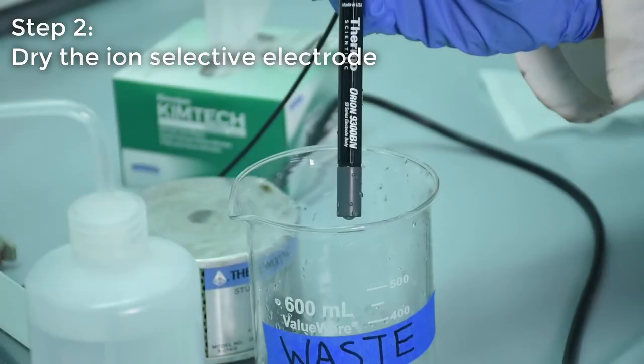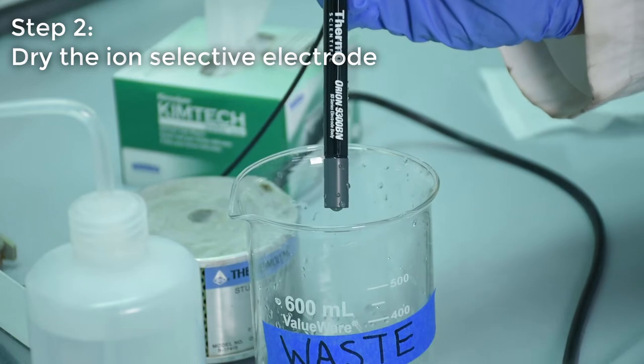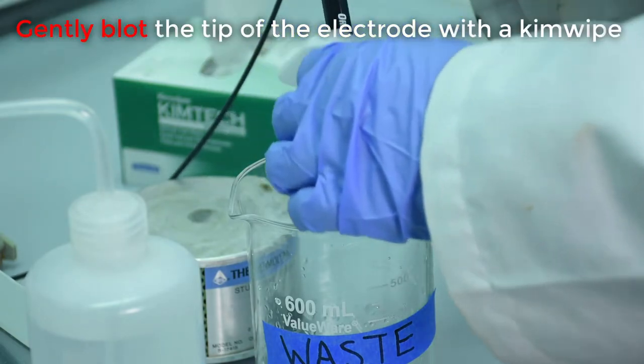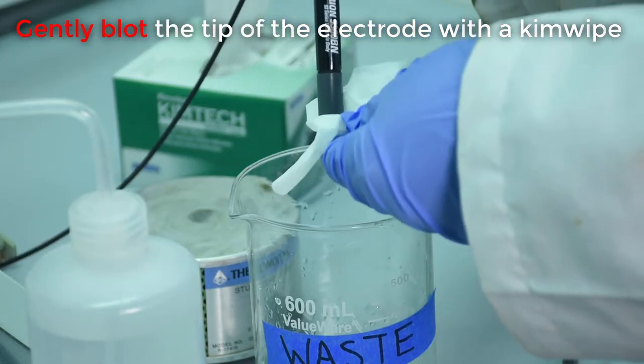It is important to dry the ion selective electrode to avoid diluting the sample with water from the washing step. It is crucial to blot, but not wipe, the tip of the electrode to avoid damaging the ion selective membrane.